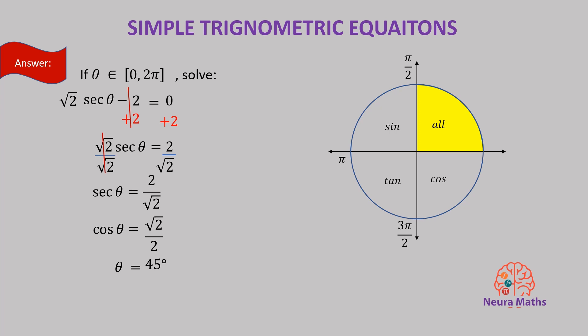What other angle within full cycle whose cosine is root 2 over 2? Since the cosine is positive in quadrant 4, the other angle is its reflection 360 minus 45, which is 315 degrees.